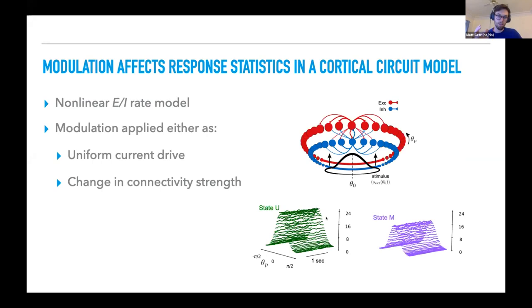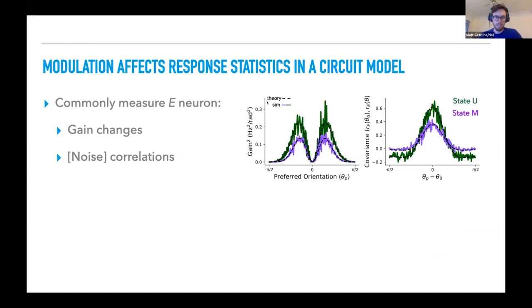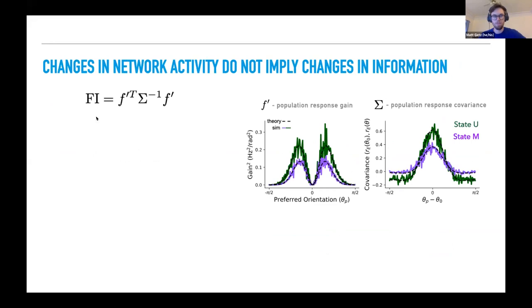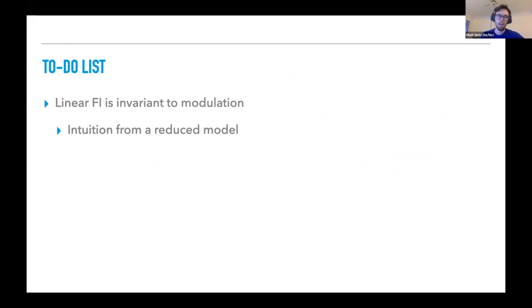We can introduce a modulation as either a uniform current drive or a change in the connectivity strength. If we simulate this model, we see that in the unmodulated regime, we might have a response profile for the excitatory units that looks like this. And with modulation, in this case, we're seeing a reduction in the rates. We can go ahead and calculate the gain, and we see a reduction in this case and the covariance. And again, we see a reduction with the modulation. Now if these changes were unique to some state change influence in a behavior, we would expect information to reflect that.